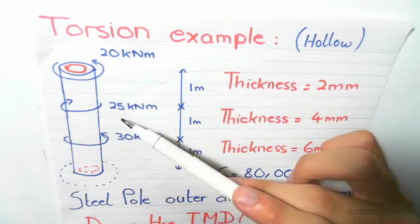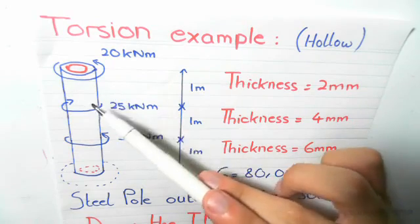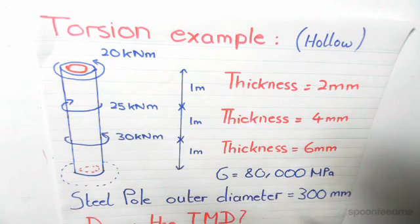The middle section has a clockwise moment of 25. As you can see, the different direction between anti-clockwise and clockwise, clockwise being the negative twisting moment and anti-clockwise being the positive.